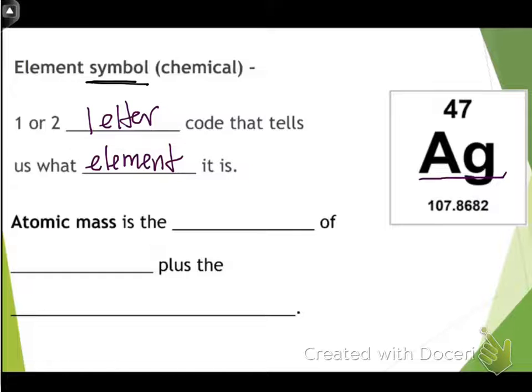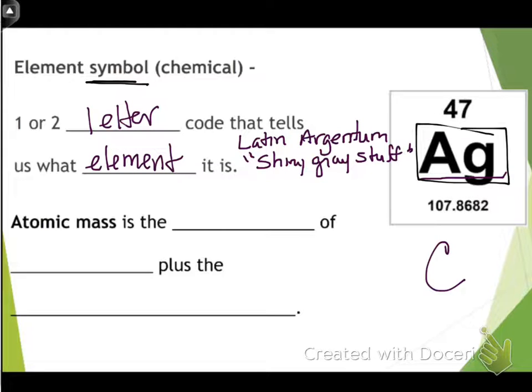Sometimes the codes make perfect sense, sometimes to us they don't make sense at all. For example, this is argentum, and that's the Latin term. Argentum is the translation for shiny gray stuff. Shiny gray stuff to us is actually silver, and so back in the day when this metal was found, that's what they called it. That's why its letters are Ag. Remember, if it's one letter it's going to be capitalized like carbon. If it's two letters, the first will always be capitalized and the second will always be lowercase.